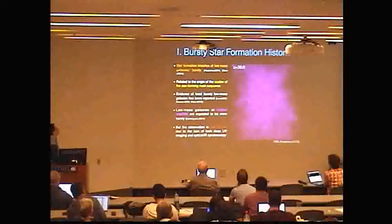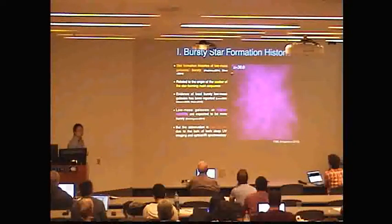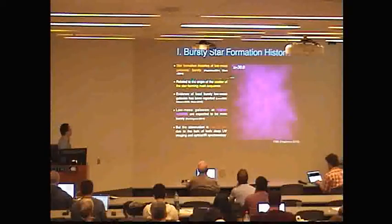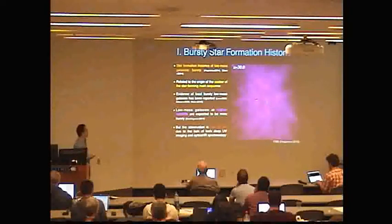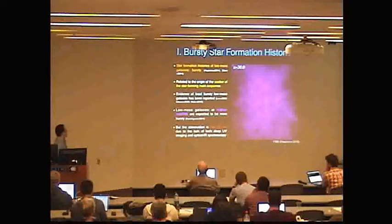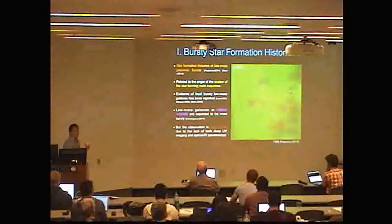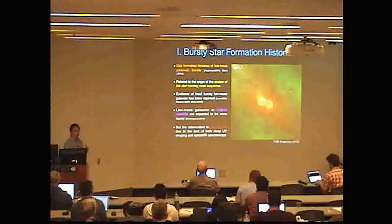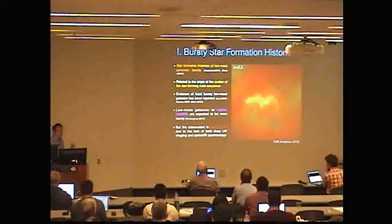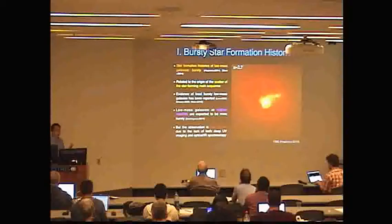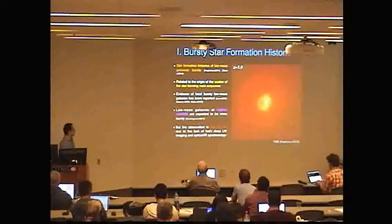The first part is the bursty star formation histories of low mass galaxies. The star formation histories of low mass galaxies are expected to be bursty, as shown by different numerical simulations. In those low mass galaxies, intense star formation events would quickly expel gas from those galaxies, resulting in a temporary quenching of star formation. But then newly accreted gas would induce new star formation. So the star formation history of low mass galaxies is quite periodic and bursty.